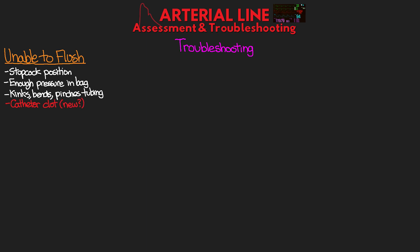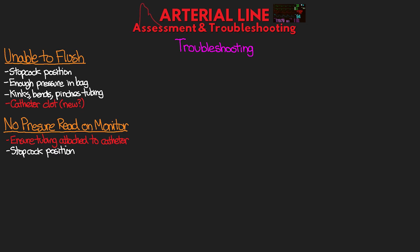Another issue is having no pressure reading on your monitor. Ensure the tubing is attached to the arterial catheter, as a disconnect can lead to significant bleeding. Check stopcock positions and end caps. If the stopcock is turned off to the transducer without a cap on the open end, you'll see a zero reading — and that open end can also be a site for your patient to bleed from. Check if the cable to your monitor has become disconnected, and ensure the pressure channel is turned on.